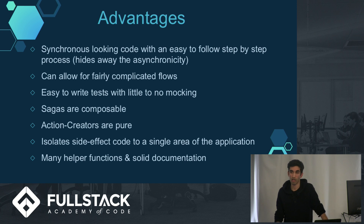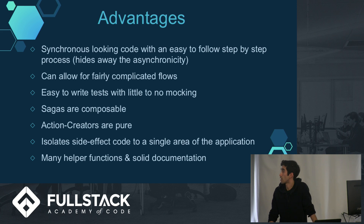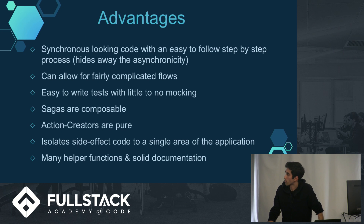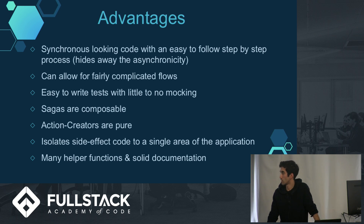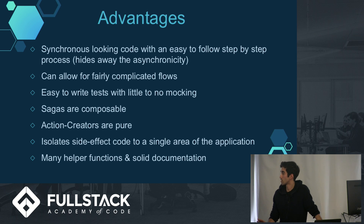These are some of the advantages of Redux Saga over Redux Thunk. It's a more synchronous-looking code with an easy-to-follow step-by-step process, and you can tuck away the asynchronicity into a separate part. It allows for fairly complicated flows — you can do a call, store it in a variable, do another call, and then based on that do a dispatch with put, so you can really layer actions on top of each other and still keep it easy to understand. Sagas are composable using yield with an asterisk, so you can set up a saga that delegates to another saga, runs it to completion, then comes back. Action creators become pure, so your action creators aren't mixed up anymore — you don't need a function that returns another function. The side effect code is separated to a single area of your application, the sagas page, and this library has a lot of helper functions and pretty solid documentation.